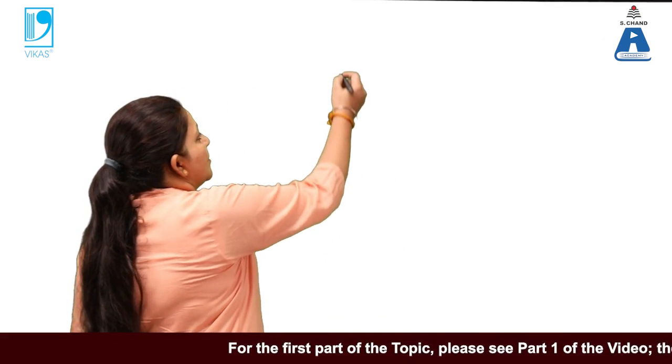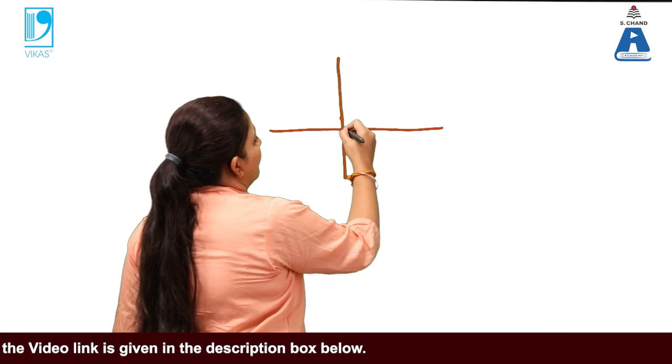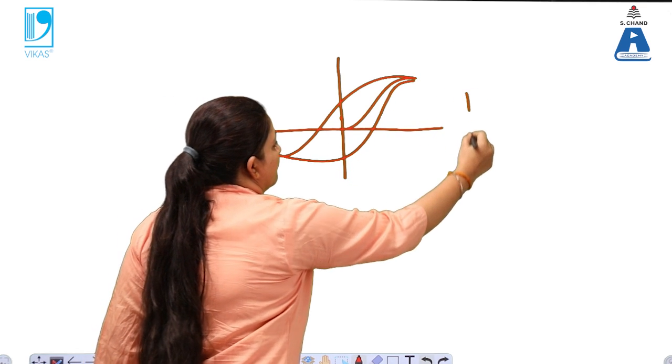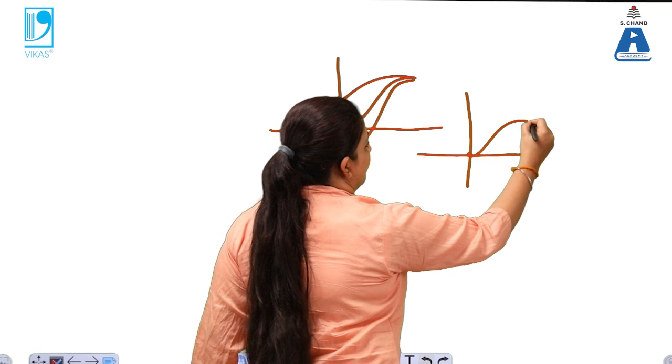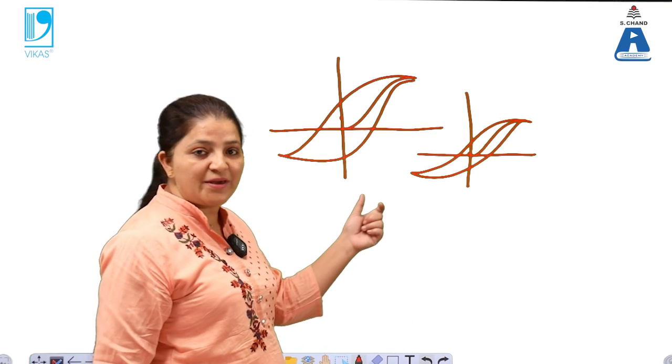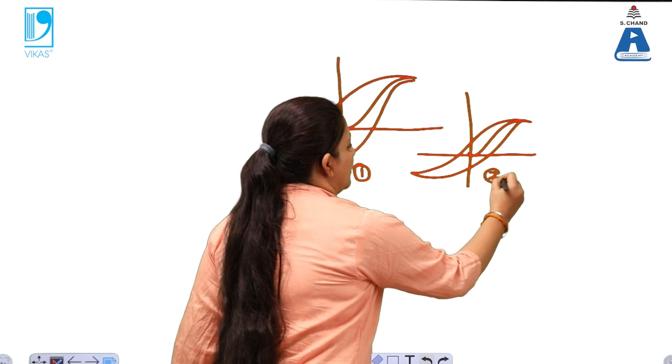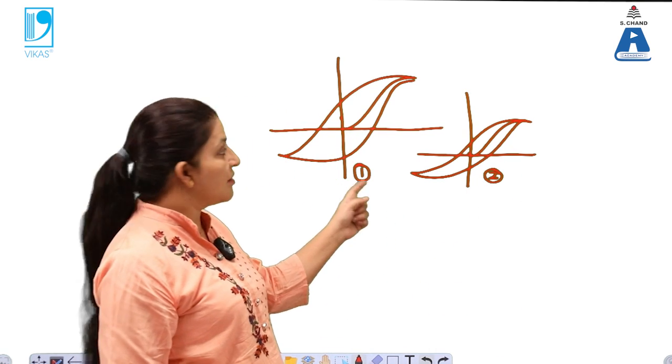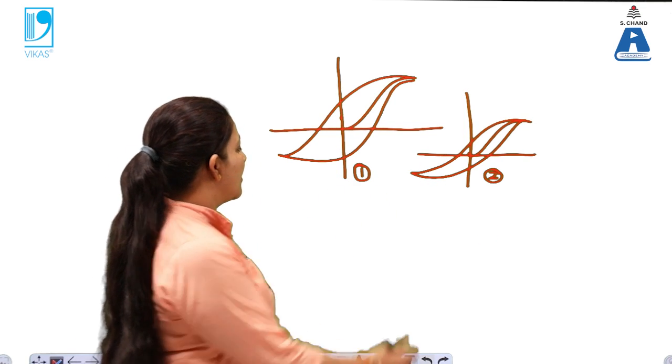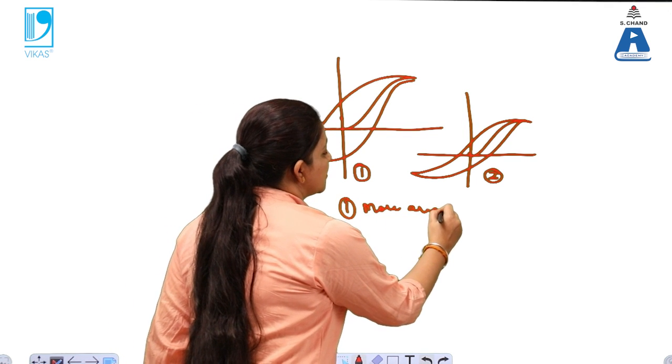So in the BH curve, we have studied about the area under the BH curve. Now these are the two kinds of BH curves over here. So in the first BH curve and that is the second one. Now area covered under the first BH curve is more than the second BH curve.